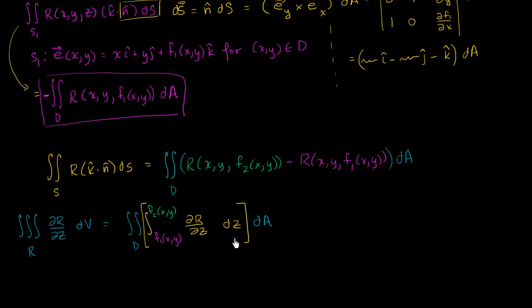Well, this is pretty straightforward. This is all going to be equal to the double integral over the domain. What's the antiderivative of this? This is just r, or r of x, y,